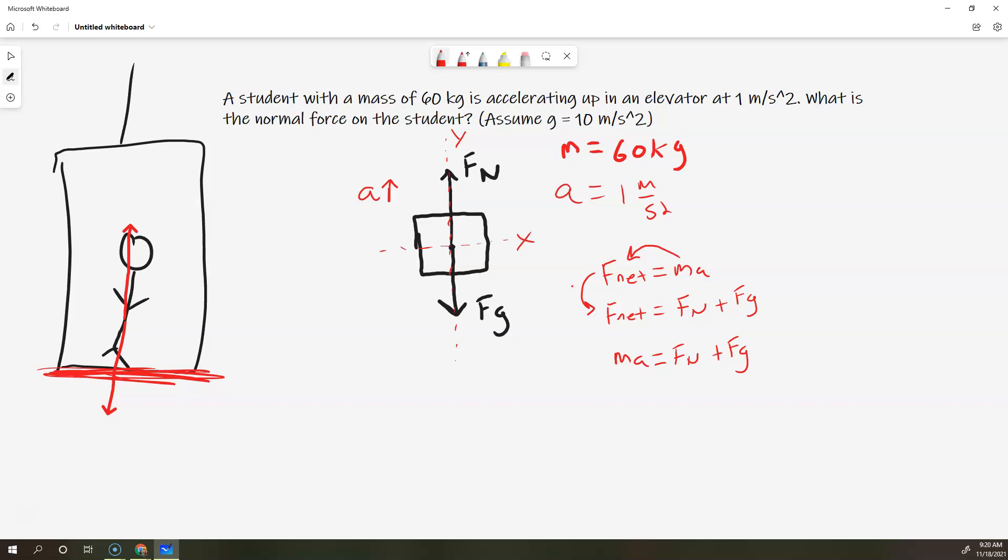So, now let's go back, let's look at this, and let's decide directions. Well, out of convention, let's call up positive, and let's call down negative. So, now I've got a mass of 60 kilograms times a positive 1 meter per second squared, because it's up, equals Fn, which I don't have any value for yet. I don't know what it is, so I'll just say Fn, plus Fg.